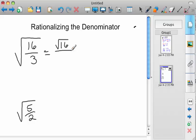So root 16 divided by the root of 3. Okay, well, root 16, we're lucky, that's a perfect square. We know that's 4.